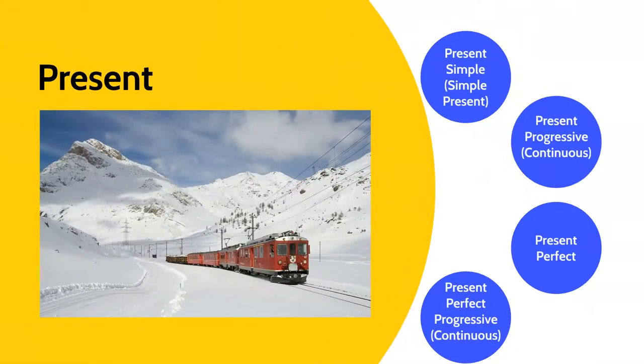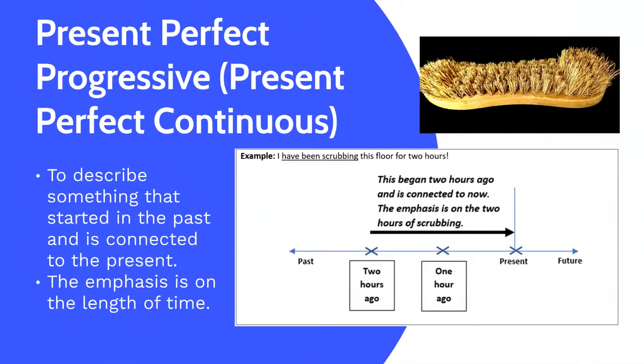The last present tense is the present perfect progressive, sometimes called the present perfect continuous. We use this to describe something that started in the past and is connected to the present. The emphasis though is on the length of time in which the event has been taking place. For example, I've been scrubbing this floor for two hours. This began two hours ago and is connected to now.